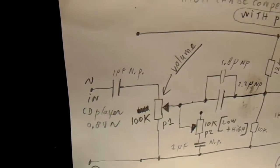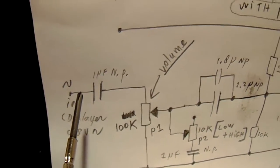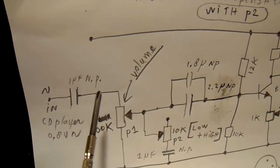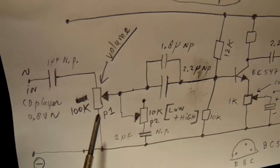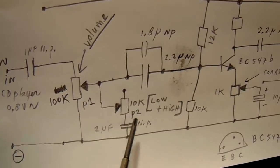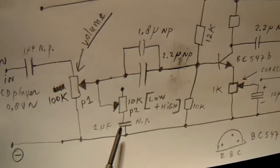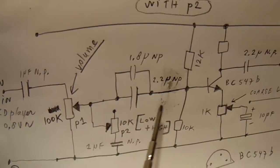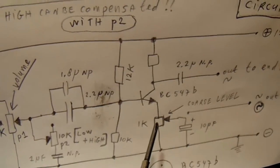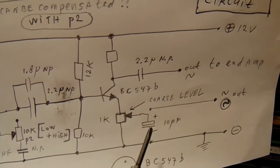The circuit here. CD player in, one microfarad cap, 100k potentiometer, 10k potentiometer, one microfarad non-polar cap, coupling capacitor to the first audio stage, with the BC547B.